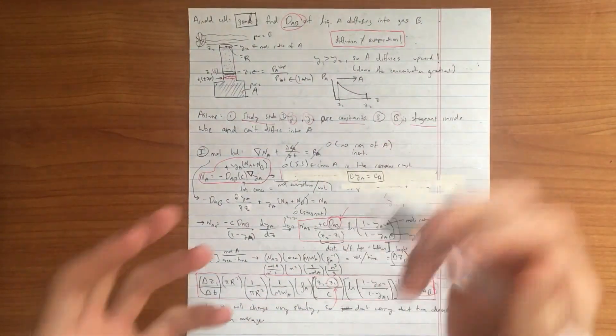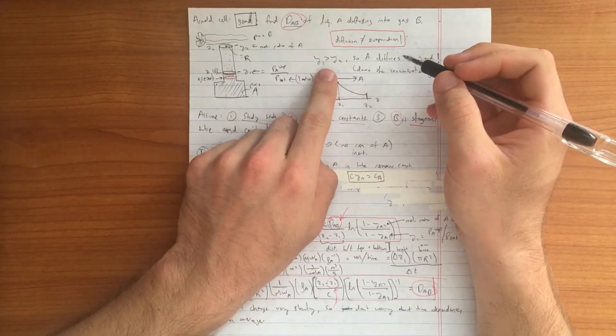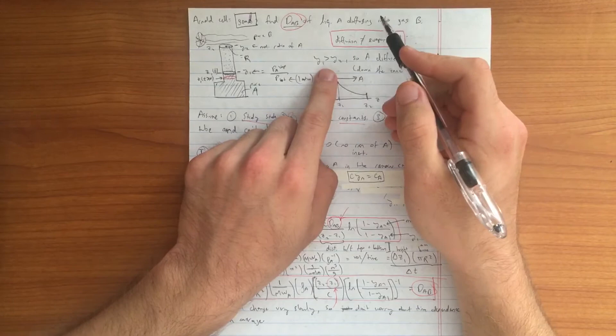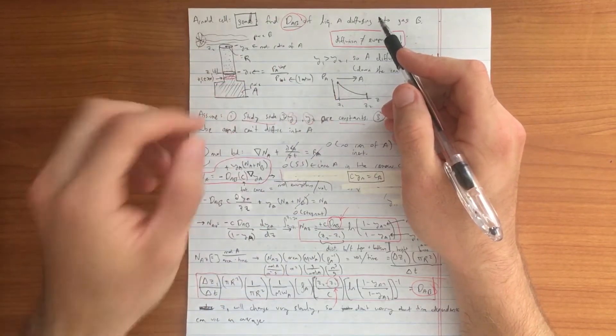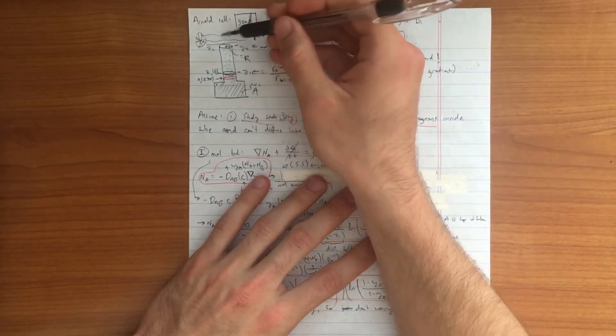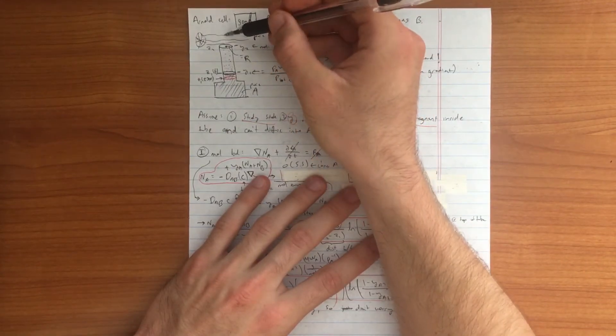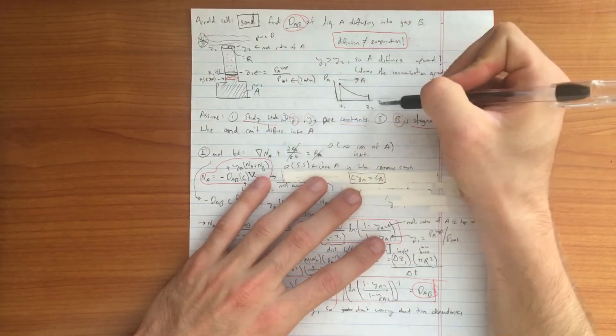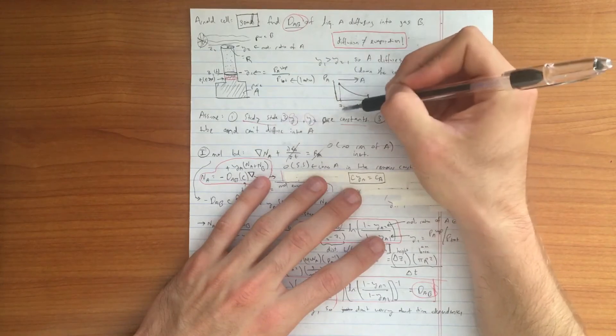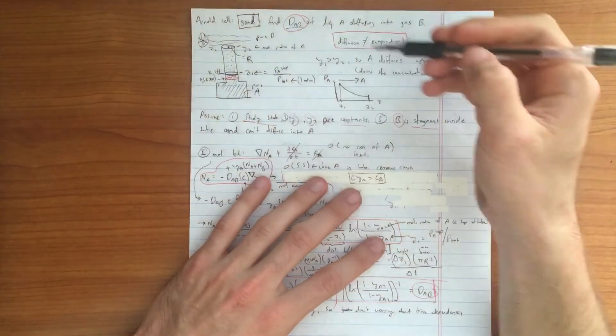This is simply one of the key themes in mass transfer, the movement of particles or species via mass transfer because of a driving force. In this case the driving force is a difference in concentration, a concentration gradient between being pure A and being zero concentration of A here. If we plotted a concentration profile, the partial pressure of A at position Z1 would have a higher value than at position Z2 at the top of the tube.